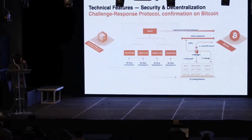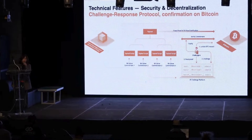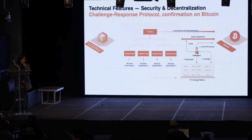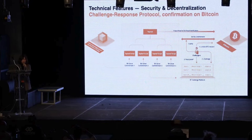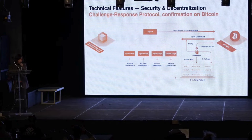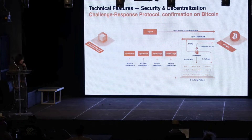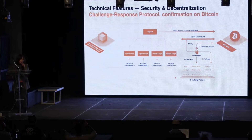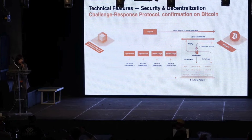Another innovative part of our solution is how we verify ZK proofs and generate the commitment. Because unlike Ethereum, Bitcoin cannot execute ZK proof verification by itself. Therefore, we have transformed the ZK proof verification program into a logic gate circuit composed of alternative denial (NAND) gates. All these logic gates are arranged in sequence to form leaf nodes of a Merkle tree, ultimately calculating a root hash. This root hash serves as a commitment to the correct execution of the ZK proof verification program and is written to Bitcoin through taproot.